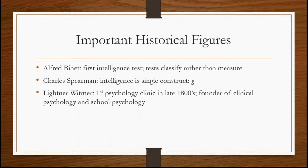Finally, Lightner Witmer is significant because he's known as the first clinical psychologist. He was also influential in starting school psychology. Before Witmer, psychology was seen more as a hard science. Witmer took it and made it more of an applied science, taking it out of the laboratory and into the clinic, and really started to apply it for the sake of bettering people and helping them improve their condition.